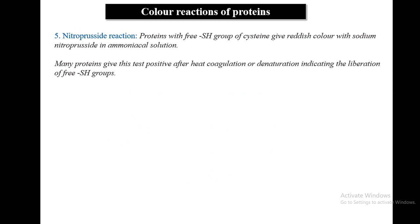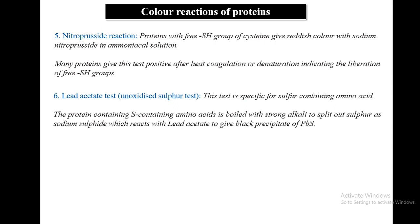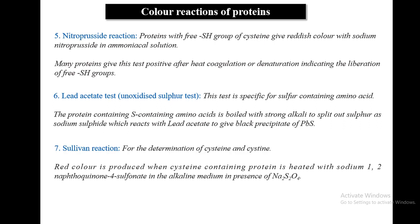The nitroprusside reaction: proteins with a free sulfhydryl group of cysteine give a reddish color with sodium nitroprusside in ammoniacal solution. Many proteins give a positive test after heat denaturation, indicating liberation of free -SH groups. The lead acetate test is specific for sulfur-containing amino acids: boiling with strong alkali splits out sulfur as sodium sulfide, which reacts with lead to give a black precipitate. The Sullivan reaction is used to determine cysteine and cystine.